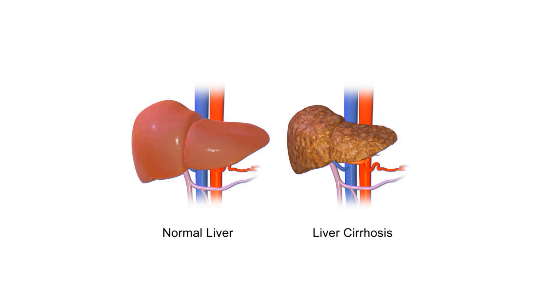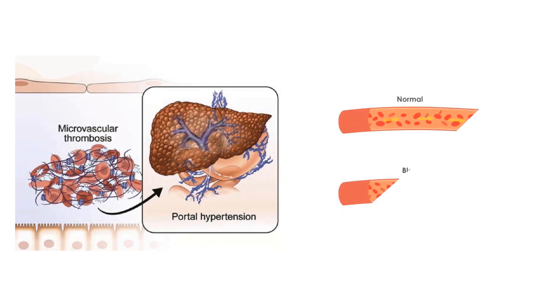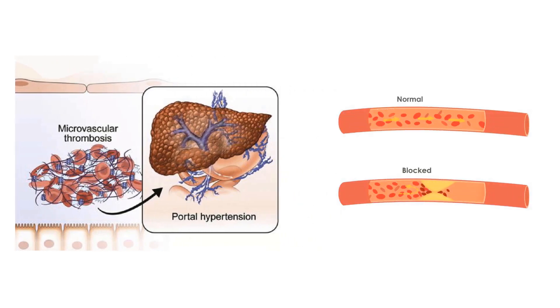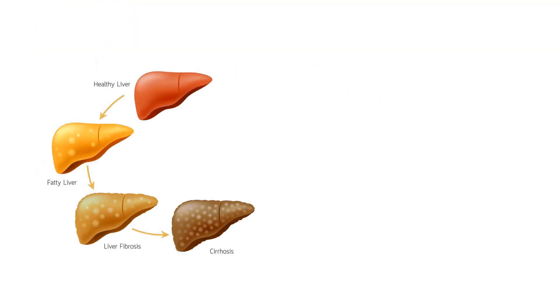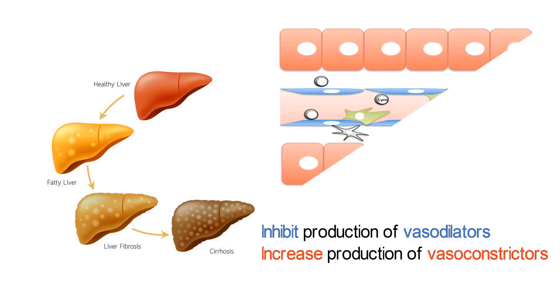A diseased liver can lead to an increase in resistance to blood flow in several ways. Thrombosis, or blood clotting in the sinusoids of the liver, is common in a diseased liver. Due to the narrow nature of the sinusoids, a blood clot can entirely cut off blood flow through a sinusoid. A diseased liver can also simultaneously inhibit production of vasodilators and increase production of vasoconstrictors, leading to blood vessels constricting with little to no end to the chemical signaling inducing the vasoconstriction.